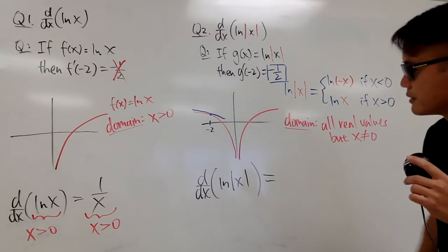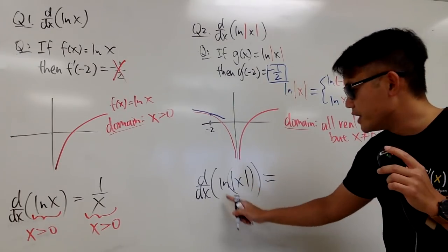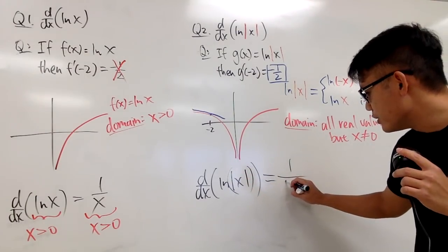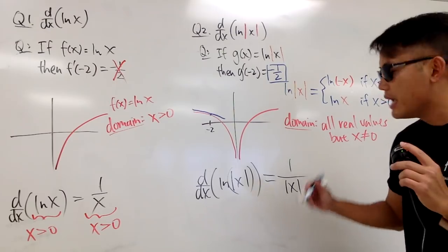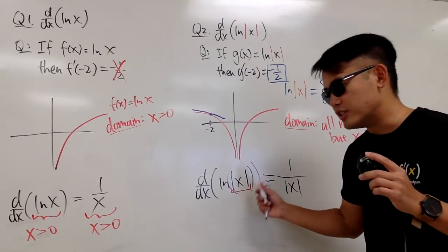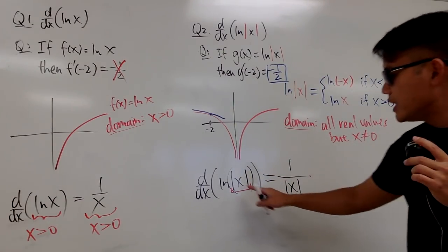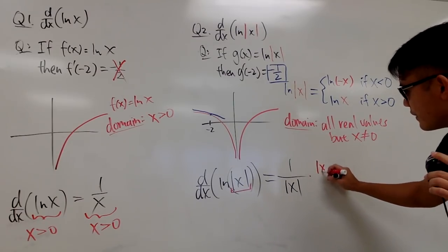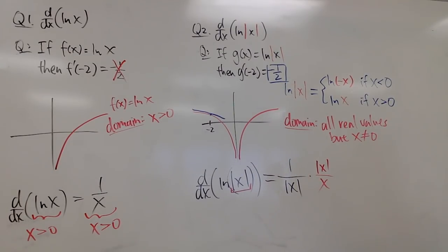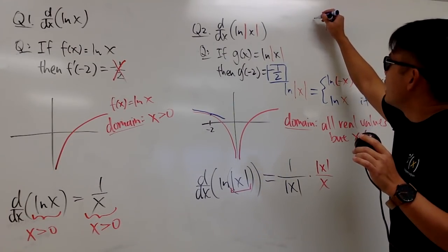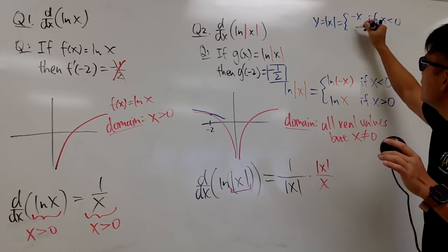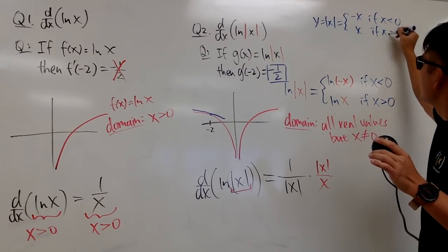Here is the deal for differentiating ln of absolute value of x. The derivative of ln is 1 over whatever is inside, so you get 1 over absolute value of x. Then you multiply by the derivative of absolute value of x using the chain rule. The derivative of absolute value of x is precisely absolute value of x over x.